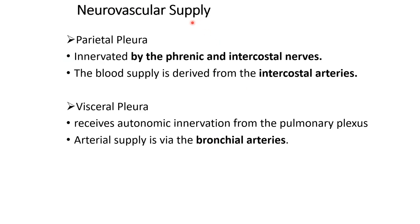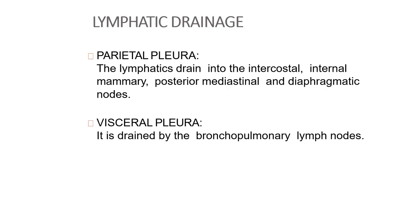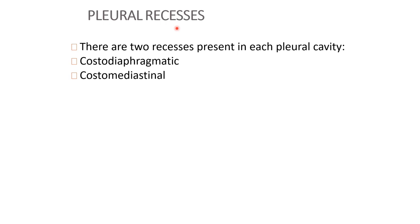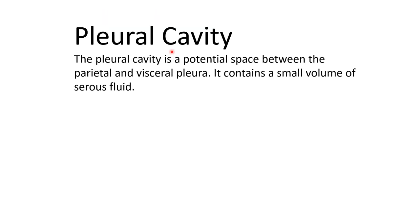Write about the neurovascular supply. The parietal pleura is supplied by phrenic and intercostal nerves, and intercostal arteries. The visceral pleura is supplied by the pulmonary plexus, and the arteries are the bronchial arteries. For lymphatic drainage, the parietal pleura drains into intercostal, internal mammary, posterior mediastinal, and diaphragmatic nodes, while the visceral pleura is drained by the bronchoopulmonary lymph nodes. Next, write about the pleural recesses: the costodiaphragmatic recess and the costomediastinal recess. The pleural cavity is a potential space between the parietal and visceral pleura, containing a small volume of serous fluid.